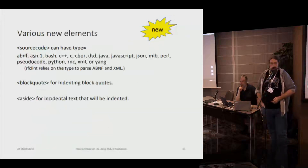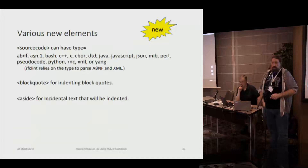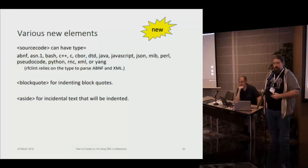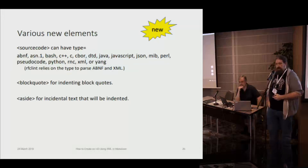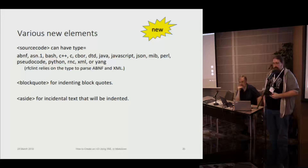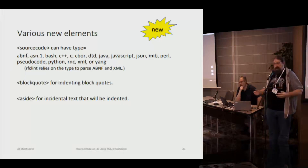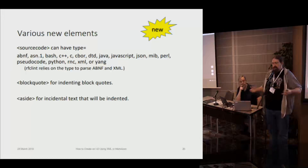Some of the other new elements are source code. Instead of using artwork, there is now a source code element that has a number of types it supports natively. Block quote is good for indenting quotes from other documents. And an aside — for incidental text like a warning, a callout, a note — gives you more flexibility in putting these things together in your document.